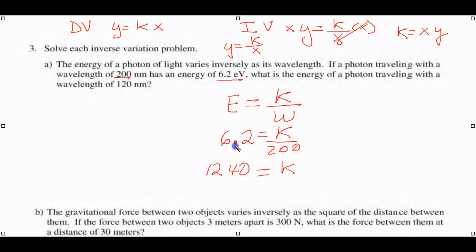We can cross-multiply. K is 1240. Now we want to find what would the energy be if it has this wavelength. We put it in our formula, E equals, we have a value for K now, which is 1240, divided by 120.